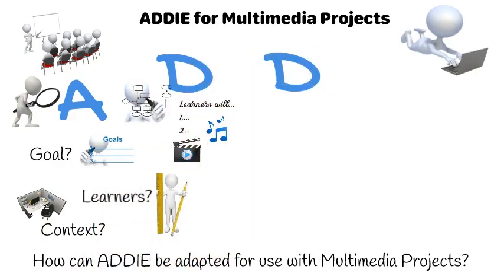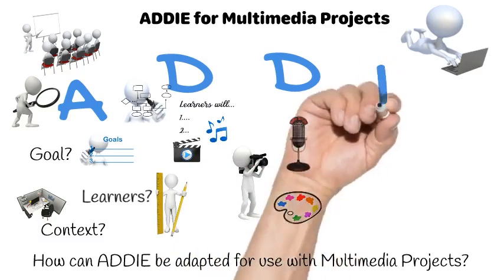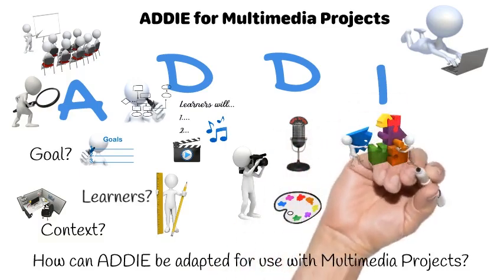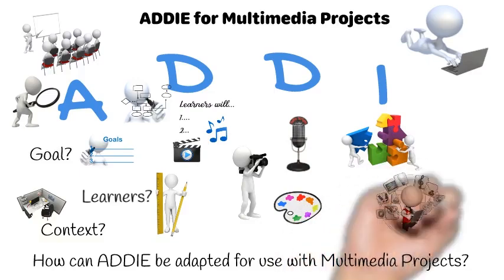D is for Develop. This is the phase where our multimedia assets are created — for example, where you record audio and video and build animations. I is for Implement. This is the phase where we put it all together, pulling the multimedia assets together using a delivery mechanism, such as a website or an e-book.